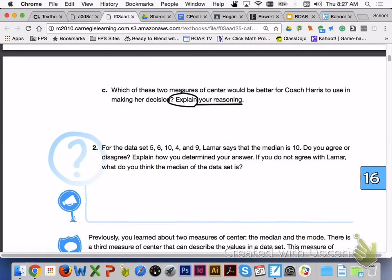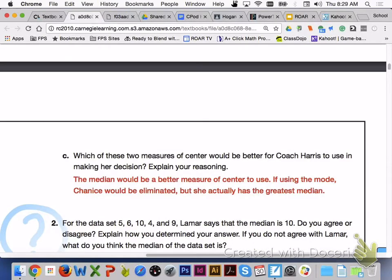Please turn to page 1071 and answer letter C with your group members. For letter C, the median would be a better measure of center to use. If we used the mode, Shanice would be eliminated from the conversation, but she actually does have the greatest median.